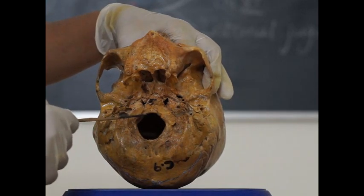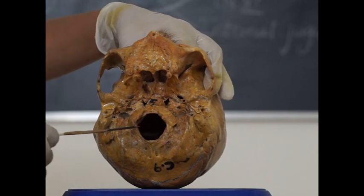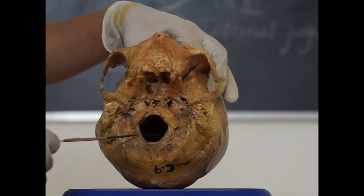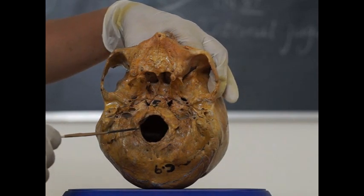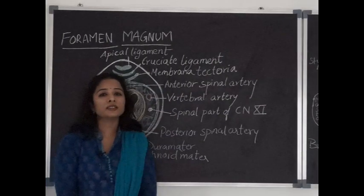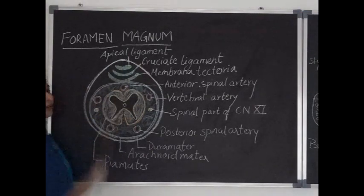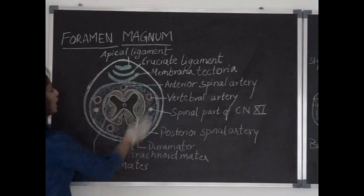Anterior margins of foramen magnum gives attachment to anterior atlanto-occipital membrane and posterior margin gives attachment to posterior atlanto-occipital membrane. Foramen magnum is a large oval-shaped foramen where it has the anterior part which is called the ligamentous compartment and posterior broader part which is called the neurovascular compartment.